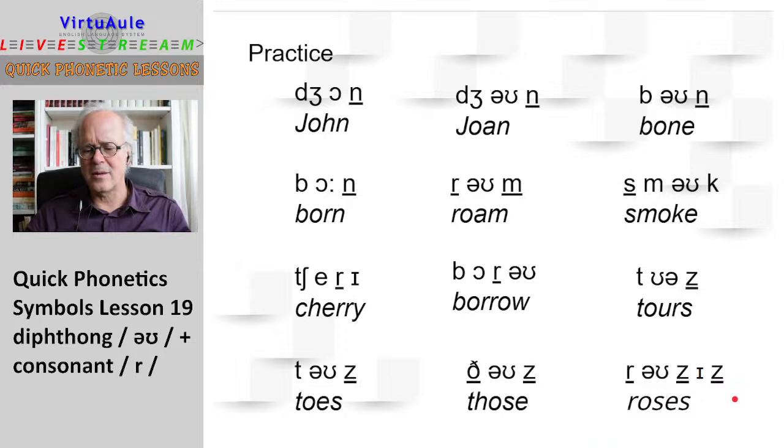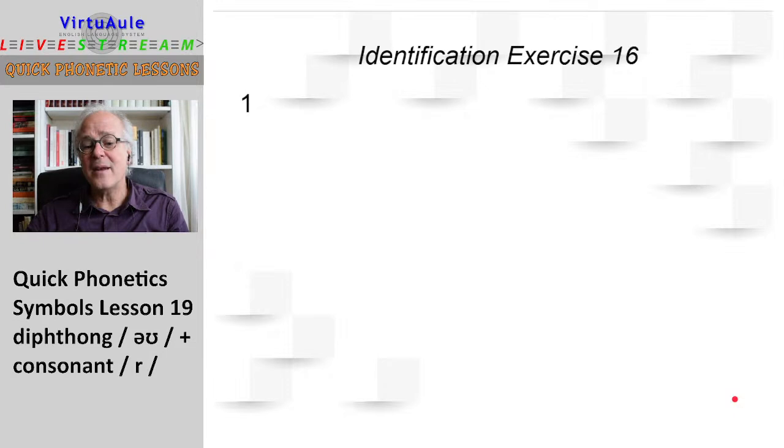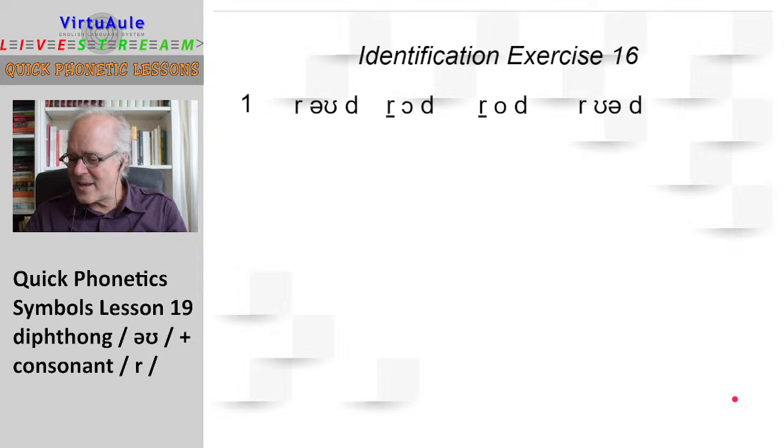Identification exercise 16. I'm going to say one of these four words and you try to identify which word I'm saying. Here's the first one: road. The R's should be underlined. This is a mistake. There should be underlined in all of the sounds. So, this is road here with the underlined letter. Sorry about that.